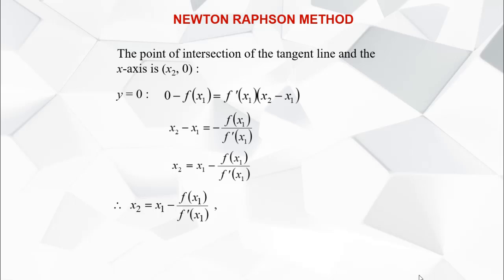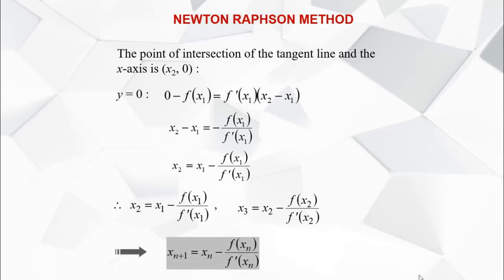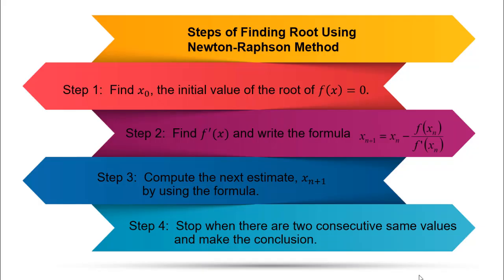To get x sub 3, do the same process: find the intersection of the tangent line at x sub 2 with the x-axis. So x sub 3 equals x sub 2 minus f(x sub 2) over f prime(x sub 2). In general, to get the next estimated value of x we use the formula: x sub (n+1) equals x sub n minus f(x sub n) over f prime(x sub n).